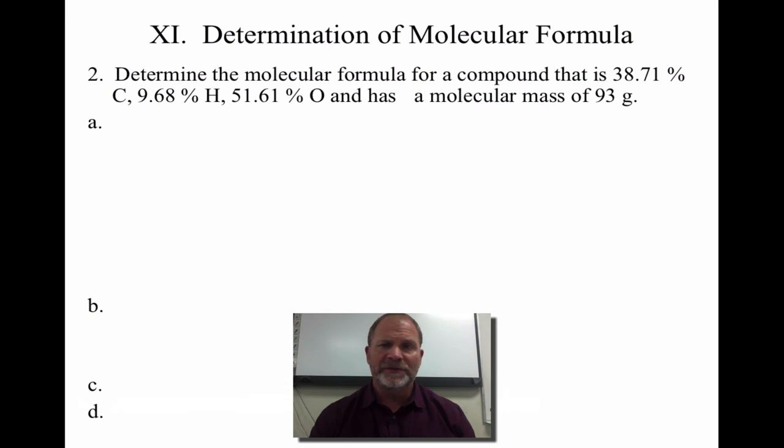Another example, we have a new sample, 38.71% carbon, 9.68% hydrogen, and 51.61% oxygen. First of all, 100% equals 100 grams. I change in all the grams.